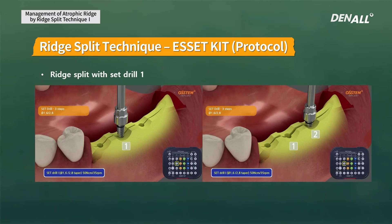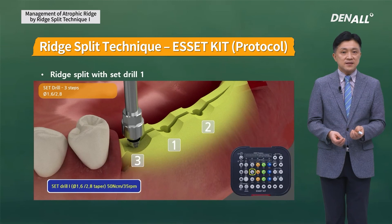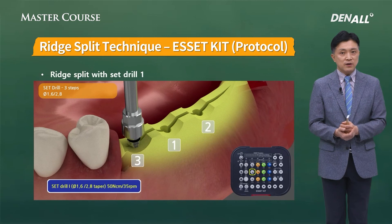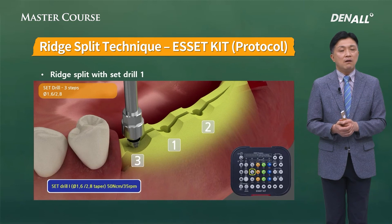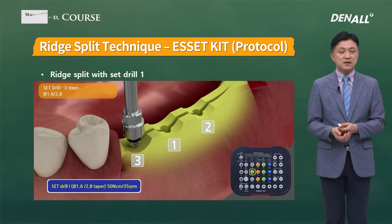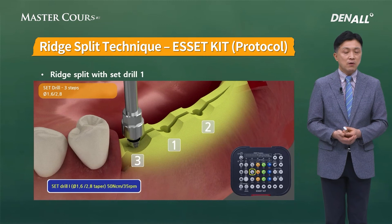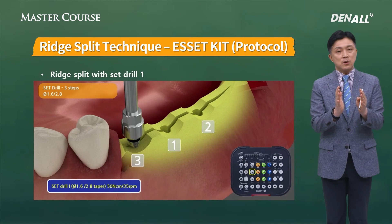When placing two implants, start from the distal area and move to the mesial area — the final split point is closest to the adjacent teeth. In the upper jaw, everything can be managed with the engine; in the lower jaw, excessive torque can occur, so start with the engine and finish with your hand. For a 4.0 mm implant, use up to set drill number 3; for a 4.5 mm implant, use up to number 4.